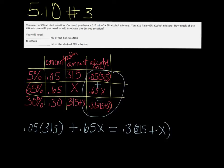It's 0.05 times 315 plus 0.65x equals 0.3 times 315 plus x. Let me jot that down so I can change screens. Okay, I got it. Alright, let's get a new screen. I'm going to write the equation down again. 0.05 times 315 plus 0.65x equals 0.3 times 315 plus x.